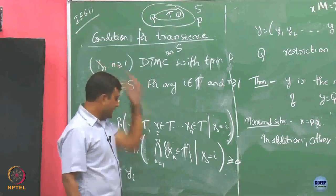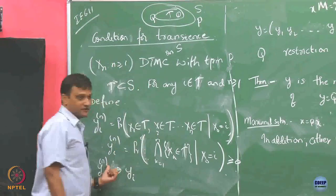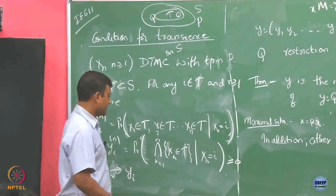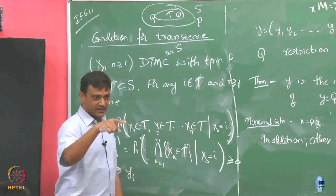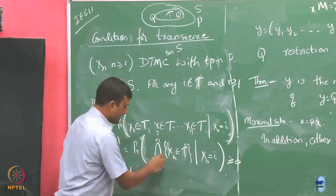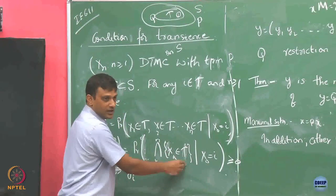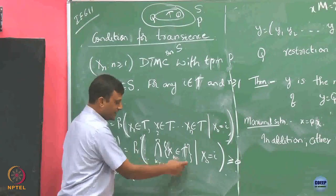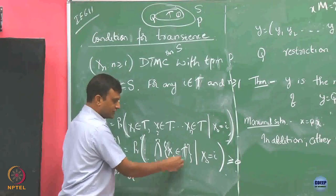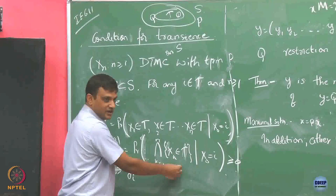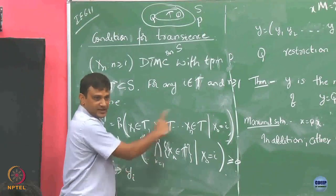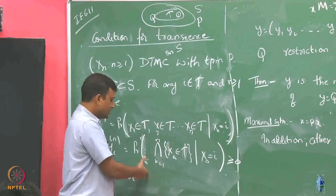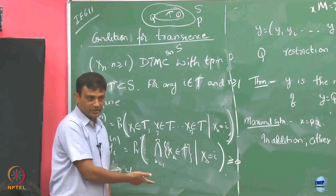As n tends to infinity, it may happen that in the first, second, third step you remain in T. But this is an intersection — it must be true for all steps. Even if Xk does not belong to T for some k, this event becomes a null set, and then the probability of the entire intersection is 0.